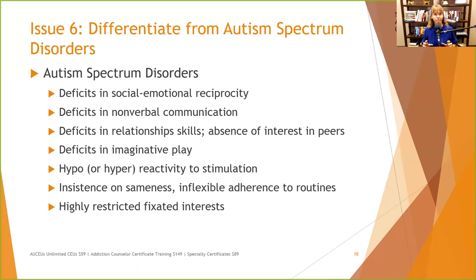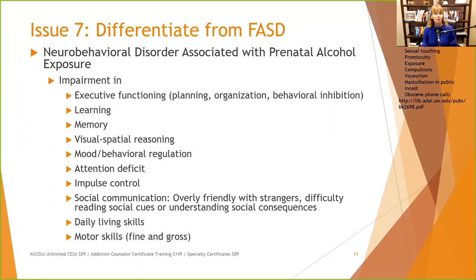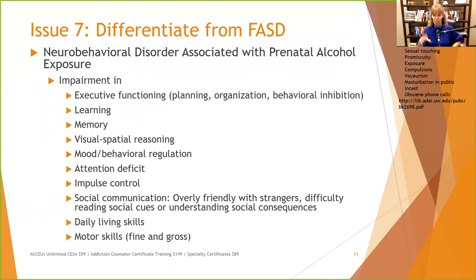We want to make sure to rule those out. Issue seven: differentiate from FASD — fetal alcohol spectrum disorder — which in the DSM is called neurobehavioral disorder associated with prenatal alcohol exposure. It is not in the autism spectrum; it's a whole different diagnosis, currently in the DSM's areas for further study. People with FASD will have impairment in executive functioning, planning, organization, and behavioral inhibition. According to the CDC, people with FASD frequently report sexual behavior issues — starting with the most prevalent: sexual advances.